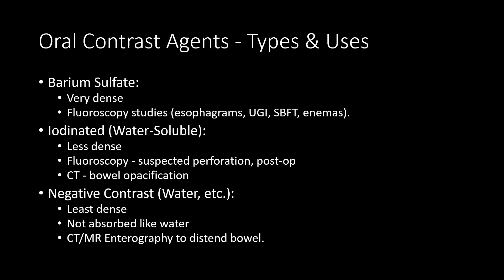Water-soluble contrast is less dense. We use it in fluoroscopy when there's a suspected perforation or the patient is post-operative, or potentially going to the operating room for surgery on their GI tract. We also use it in CT to opacify the bowel, because barium on CT is so dense it causes a lot of artifact and degrades image quality, whereas iodinated contrast is just the right density to allow opacification of the bowel without artifact. Negative or neutral contrast is used less frequently in specialized studies like CT and MRI enterography — it looks like water, passes through the GI tract without absorption allowing distention, without the bright appearance of iodinated contrast.